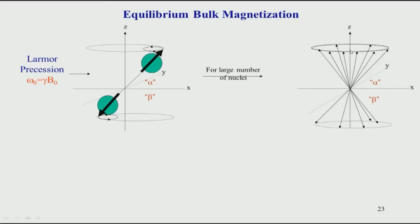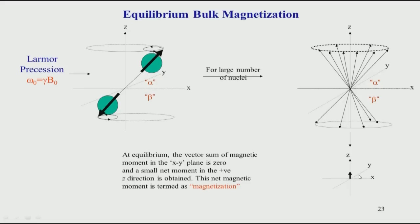All the spins in the alpha state will be in the plus Z direction and those in the beta state in the minus Z direction. According to the Boltzmann law, there are more spins in the ground state — the alpha state — than in the beta state. Therefore, if you do the vector addition and subtraction, you end up with a small net magnetization pointing in the positive Z direction. This is what we call net magnetization, and all NMR experiments — 1D, 2D, 3D — deal with this spin in different directions.